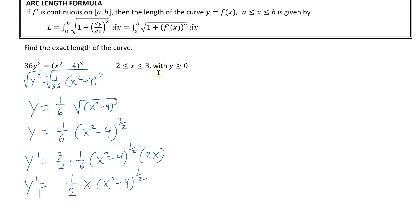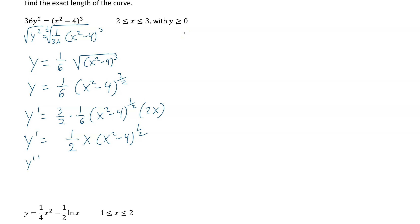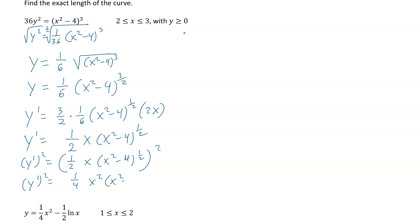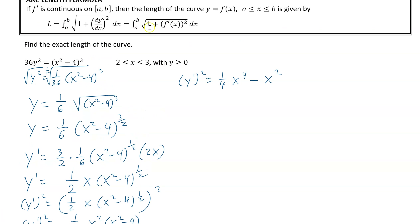Now that we have our y prime, we need to square it. If we square this, we get y prime squared. Each part gets squared, so y prime squared equals 1/4 times x squared, and then the square root of the square root will cancel, giving us x squared minus 4. We can then distribute that: x to the fourth minus — that 4 and the fourth cancel — giving us just x squared. Next thing to do is add 1, so we put 1 plus here and plus 1 there, and then we take the square root of it.